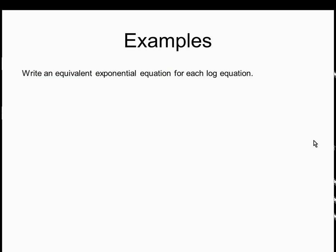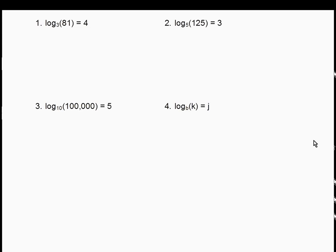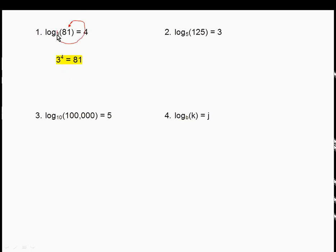Let's write an equivalent exponential equation for each log equation. We're going from logs to their equivalent exponentials. The pattern: you make a little circle starting with the same base. For log base 3 of 81 = 4, the base is 3, the exponent is 4, giving 3 to the 4th = 81. For log base 5 of 125 = 3, we get 5 to the 3rd = 125, which we can verify.